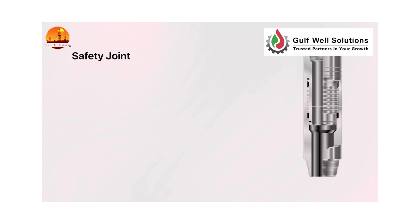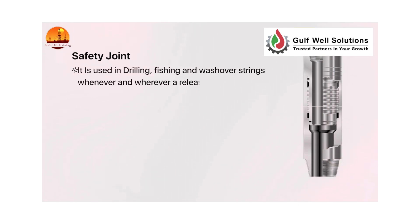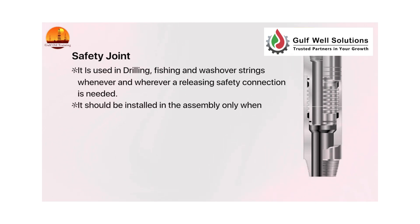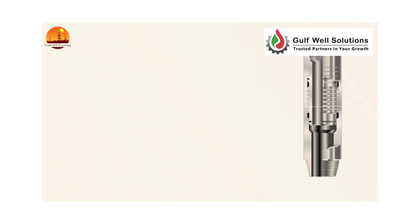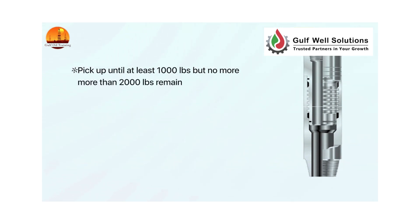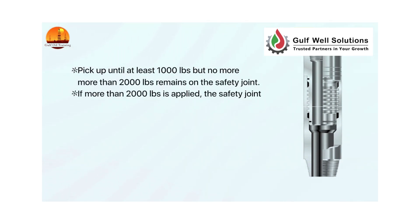Safety joint: used in drilling, fishing, and washover strings whenever and wherever a releasing safety connection is needed. It should be installed in the assembly only when using taper taps, die collar, or washover string. To disengage: rotate to the left at 40% of the tool's right-hand make-up torque for a half turn. Pick up until at least 1,000 pounds but no more than 2,000 pounds remains on the safety joint. If more than 2,000 pounds is applied, the safety joint will release but can damage the shoulder.